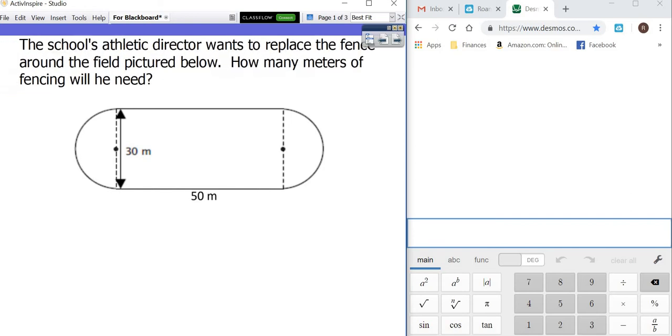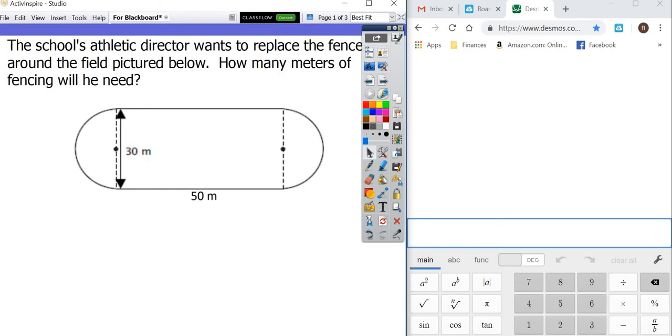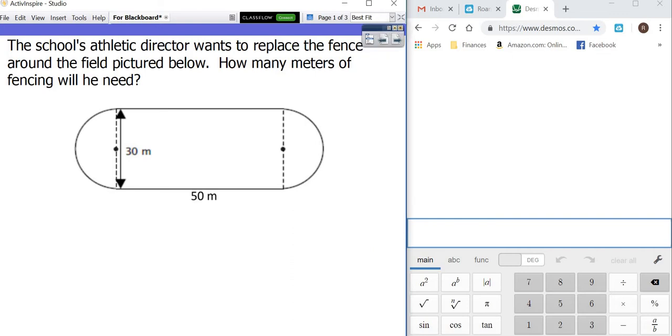Whenever he says—whoopsie, did not mean to move that. [struggles with writing tool] Okay guys, I'm trying. Got it. Around the field—around means that we're having to come up with the perimeter. Okay, so we're going to figure this out.